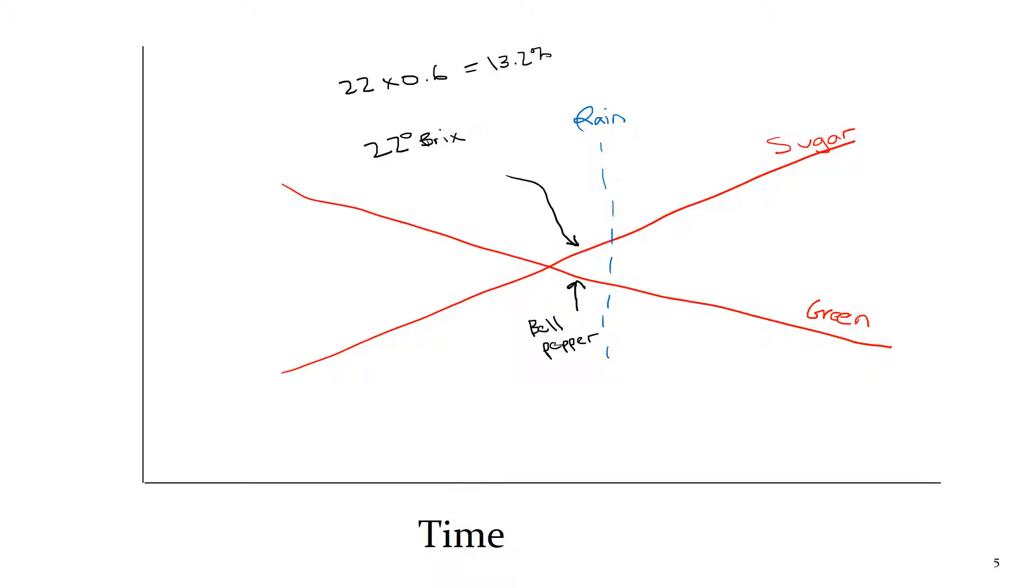What if instead you picked after the rain? You let the rain pass. Hopefully your grapes didn't get moldy. And you decided to pick somewhere after the rain, and let's say you were at 25 degrees brix. Well, applying that same conversion factor of 0.6, let's multiply 25 by 0.6, and we get an alcohol level of 15%. So if you pick before the rain, you probably had fairly low alcohols. After the rain, you had higher alcohols. And at this picking point, your green flavors are going to be lower. So very likely you had no bell pepper flavor.